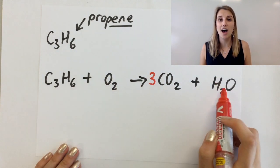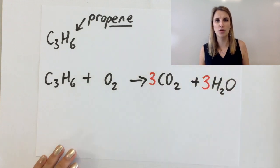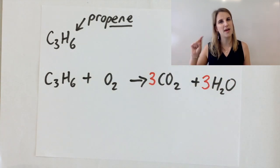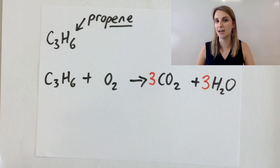The hydrogens I need I've got six on the left and I've only got two on the right so that means I need another big three in front of that to make it six hydrogens on the right hand side.